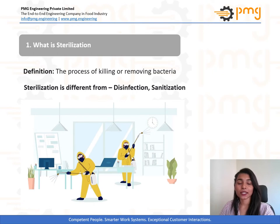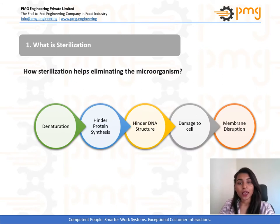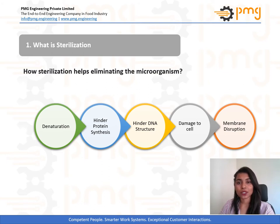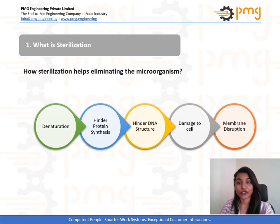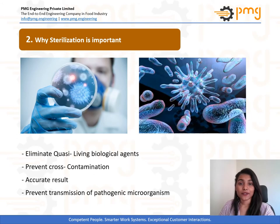The aim of sterilization is to remove or destroy microorganisms from material or any surface. There are various techniques on which sterilization is dependent, for example: denaturing of proteins, interfering with protein synthesis, interrupting the DNA structure synthesis or repair process, oxidative damage to cells, and disrupting cell membrane structure.